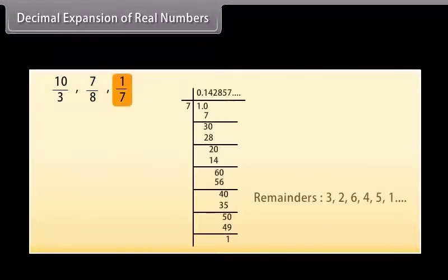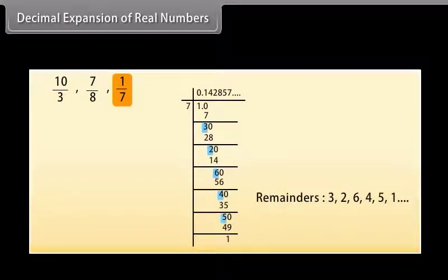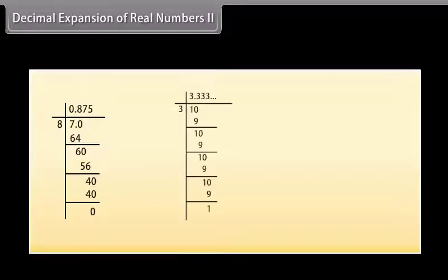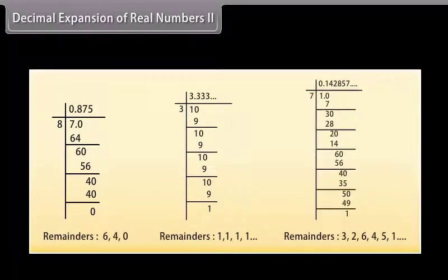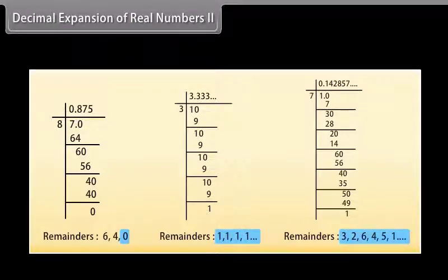And the remainder of 1 by 7 is 3, 2, 6, 4, 5, 1. Did you notice something? The remainder either becomes 0 after a certain stage, or starts repeating itself.